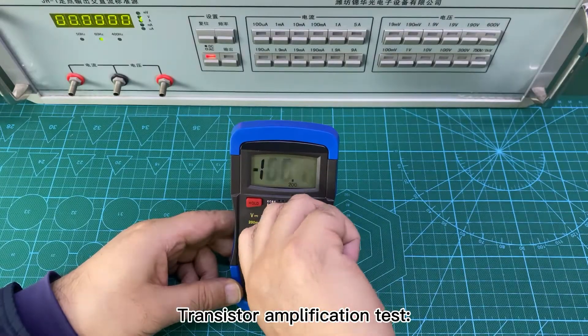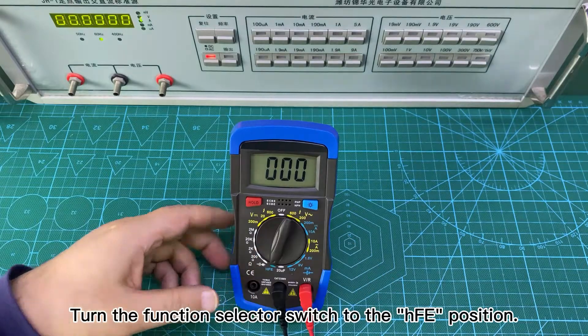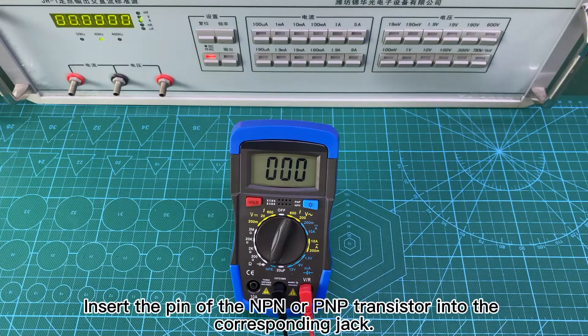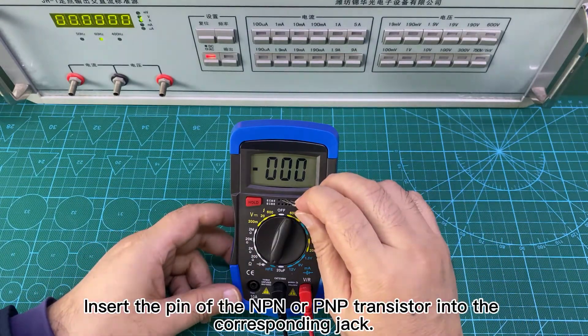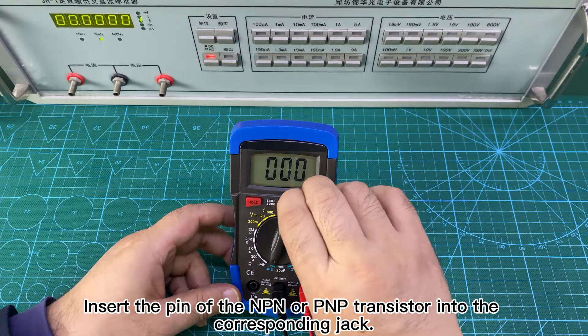Transistor amplification test. Turn the function selector switch to the position. Insert the pin of the NPN or PNP transistor into the corresponding jack.